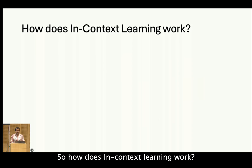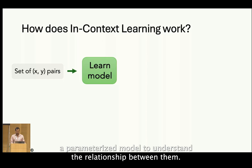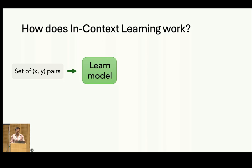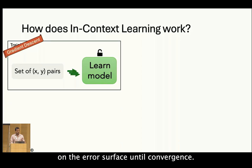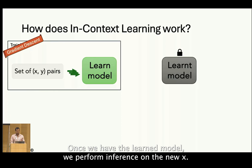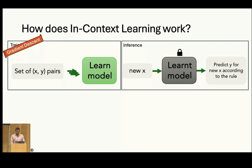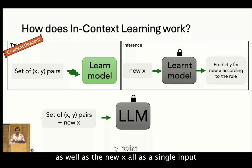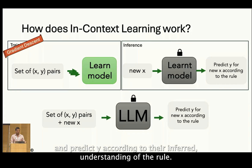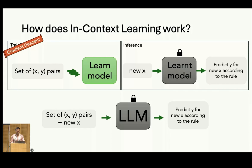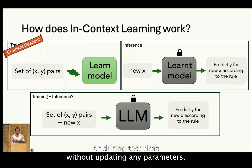So how does in-context learning work? Traditionally, when we are given a set of X-Y pairs, we would learn a parameterized model to understand the relationship between them. We update the parameters of this model by performing gradient descent on the error surface until convergence. Once we have the learned model, we perform inference on the new X according to the rule learned during training. In contrast, LLMs take the set of X-Y pairs as well as the new X all as a single input, and predict Y according to their inferred understanding of the rule — performing training and inference all during test time without updating any parameters.